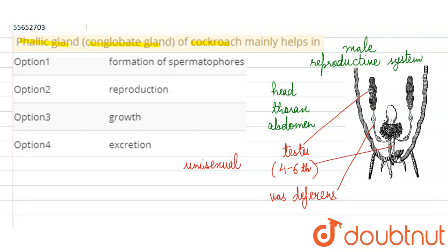Finally, we can see the ejaculatory duct is present. The vas deferens open through the ejaculatory duct. This opens into the seminal vesicles. So what we see here are the cockroach's seminal vesicles.